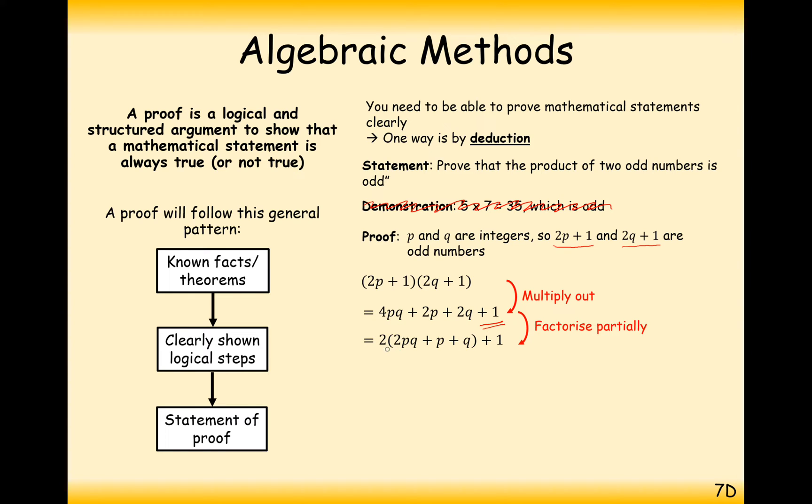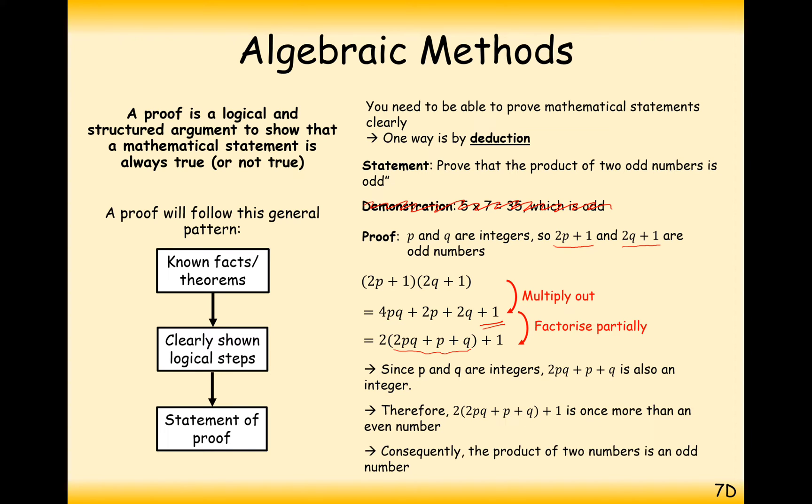So what we've got here is effectively 2 times something, and it doesn't really matter what this something here is. This value here is going to be an even number because it has a multiple of 2 in it. And if it's an even number, add 1, that makes it an odd number. So since p and q are integers, this value here is also an integer. 2p plus 1 is 1 more than an even number, so therefore it must be an odd number.